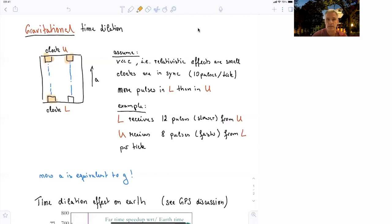Similarly, you can discuss the upper clock, which, because it's accelerating upwards, it only receives 8 pulses per tick. So it's expecting 10, so it perceives to be faster.